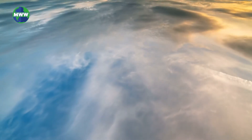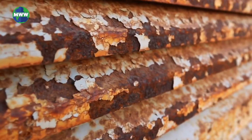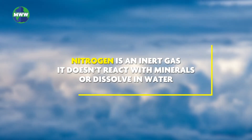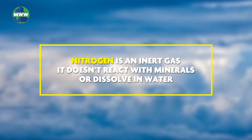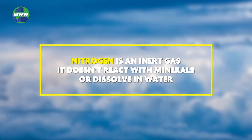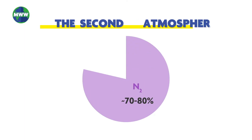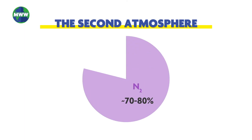Most of the gases in our atmosphere bond with minerals or dissolve in seawater. But nitrogen is an inert gas, so it doesn't do that. Nitrogen became the most abundant gas. Our second atmosphere was mostly nitrogen, 20% carbon dioxide, with lesser amounts of volcanic gases and variable amounts of water vapor.